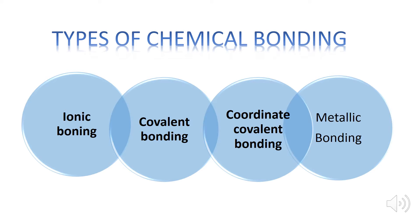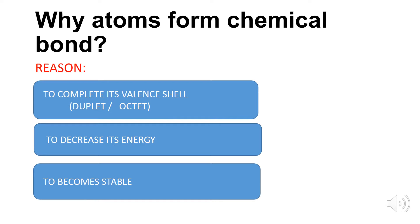Now let's talk about the types of chemical bonding. There are four types: ionic bond, covalent bond, coordinate covalent bond, and the metallic bond.